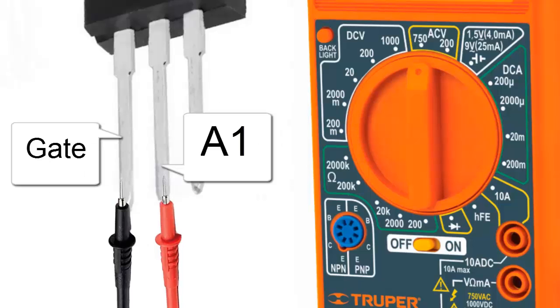7. Then, regardless of the color of the multimeter probes, check for continuity between the anode 1 terminal, or NT1, and the gate. There should be continuity between the two pins.